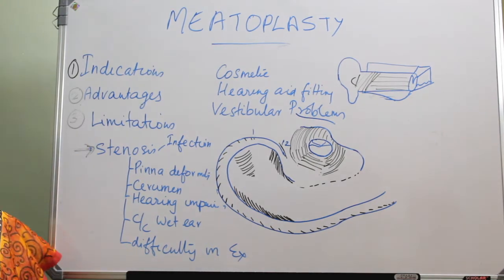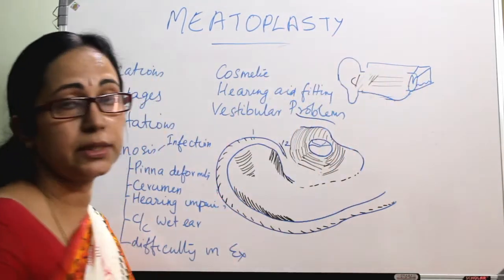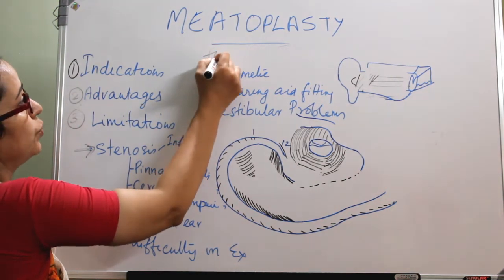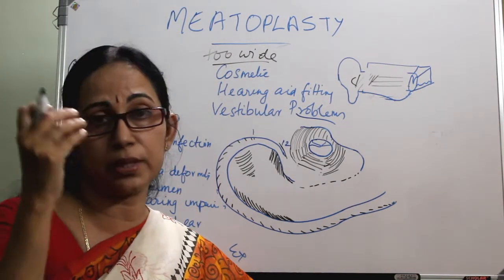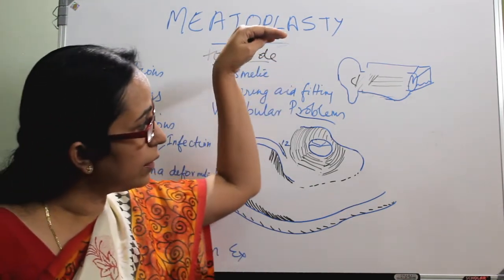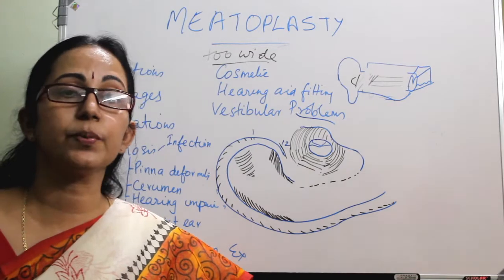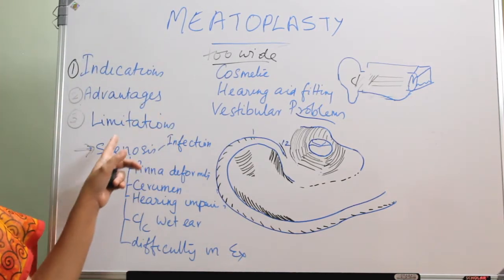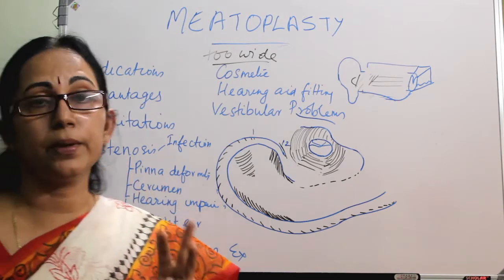On the other hand, if the meatoplasty is too wide, there will be cosmetic deformity visible from outside, difficulties with proper fitting of hearing aids — the aid may fall into the mastoid bowl — and there can be vestibular problems when the patient is exposed to wind or cold climate, causing labyrinthine vertigo. So you must be cautious not to make it too small or too wide.